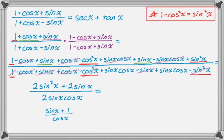And now if I break it up into two fractions, I end up with tangent, which is sine over cosine, plus 1 over cosine, which is secant, which is what I was trying to prove this thing was equal to.